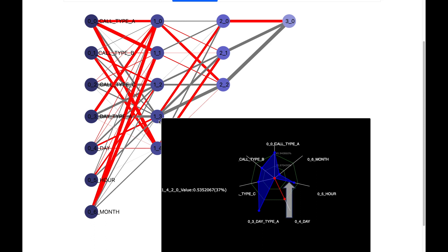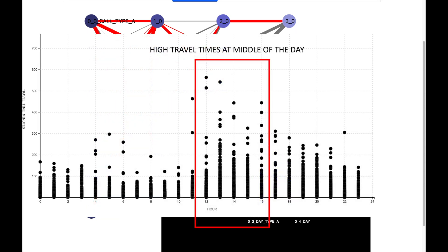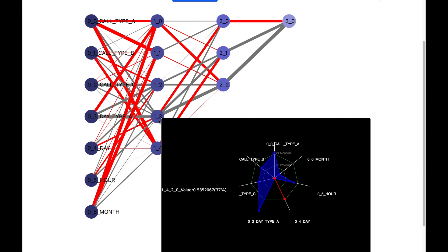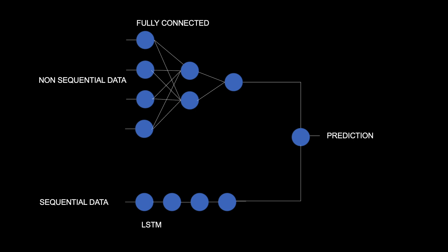For example, we see that a blue line for the hour — not too short and not too high — can cause a high travel time. Also, days at the beginning and end of the month can cause a high travel time. Now let me move to the next component of our machine learning model: the LSTM layer, which stands for Long Short-Term Memory. It is used for sequential data, which in our case is the sequence of places the taxi goes through.